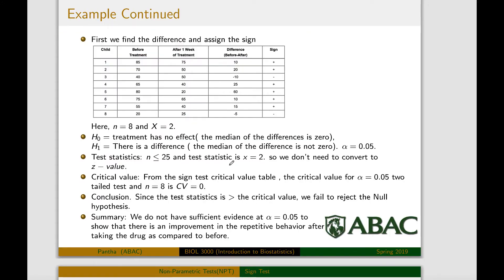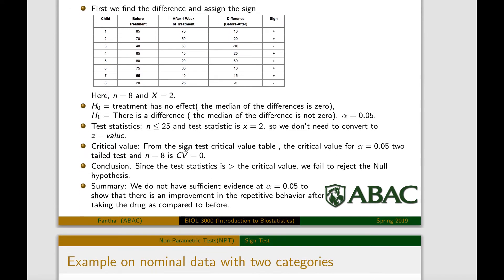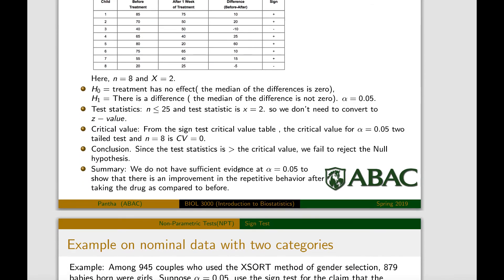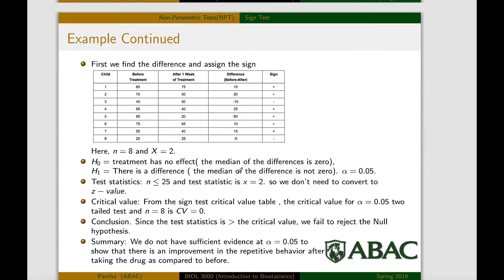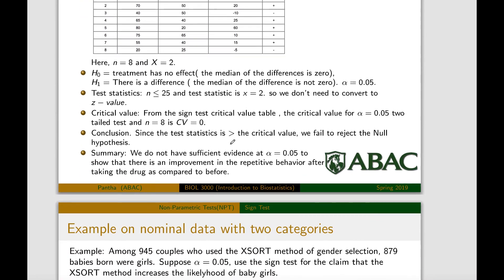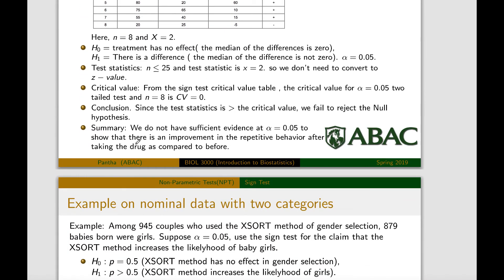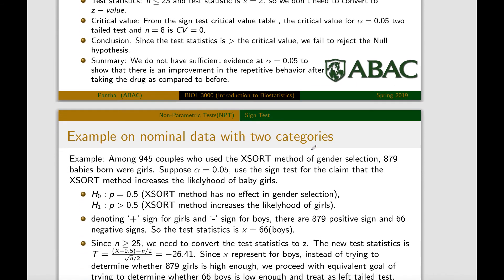The test value, not the critical value. Here in this case, the test value or the test statistic is 2. To find out the critical value, we use the table, and from the table we got critical value is 0. And then since the test value is greater than the critical value, we do not reject the null hypothesis. So do not reject the null hypothesis means the median behavior, the median of these two data are not different statistically. So what we see is we do not have sufficient evidence at alpha equals to 0.05 to show that there is an improvement in the repetitive behavior after taking the drug as compared to before.